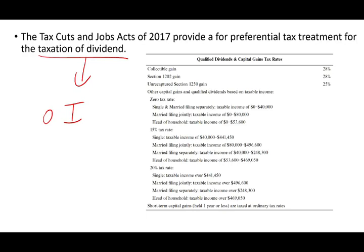Starting in 2003 with the passage of the Jobs and Growth Act, dividends started to be treated differently — meaning they were getting a preferential treatment; they were taxed differently than ordinary income. Again, in 2017 with the Tax Cuts and Jobs Act, the taxation of dividend was also treated under a preferential treatment, and this is what we're going to be discussing.